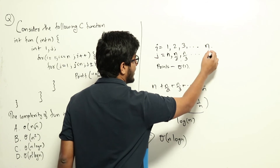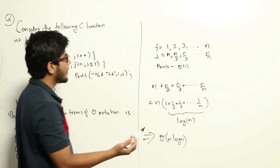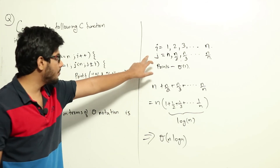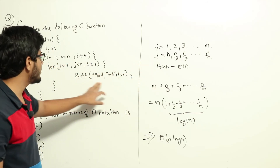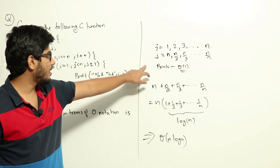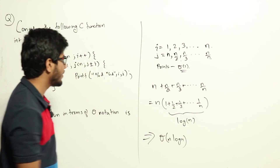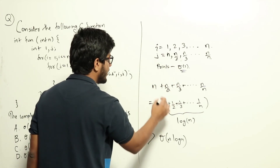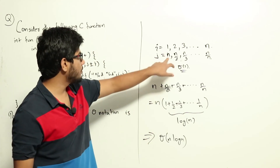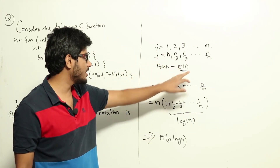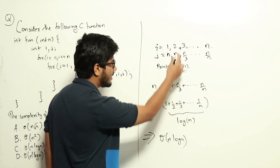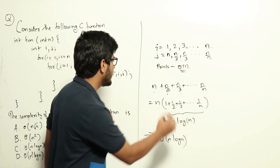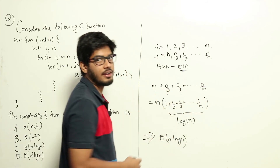Similarly, up to when i becomes n, j will take n/n — that is 1 — different values. For each value of i, the printf statement inside the j loop executes once per iteration and takes theta(1) time. So the total number of printf executions is: when i=1 it runs n times, when i=2 it runs n/2 times, when i=3 it runs n/3 times, and so on until i=n, where it runs once. This total is the overall complexity.